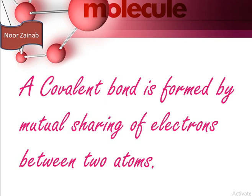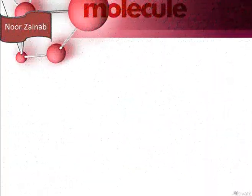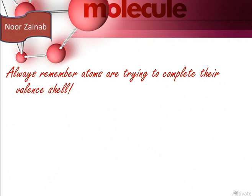A covalent bond is a bond which is formed by mutual sharing of electrons between two atoms. Always remember — atoms are trying to complete their valence shell in order to gain the electronic configuration of noble gas elements.